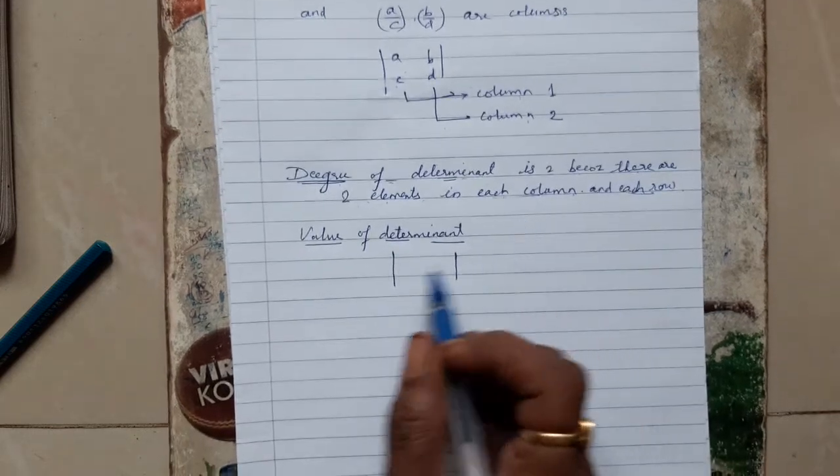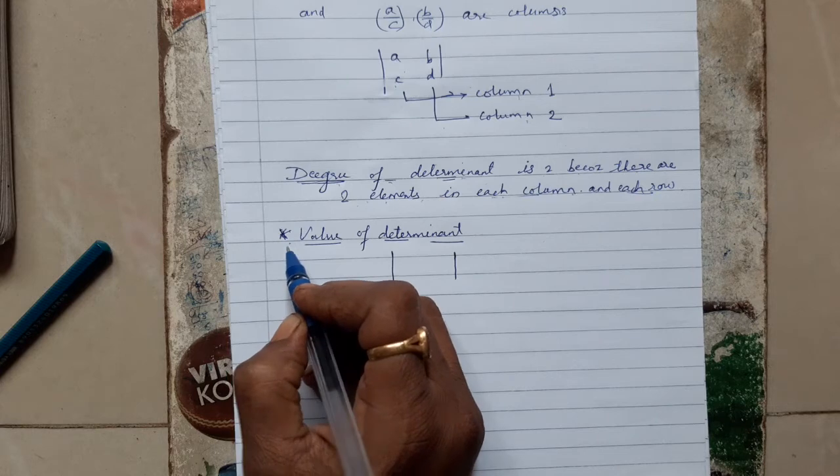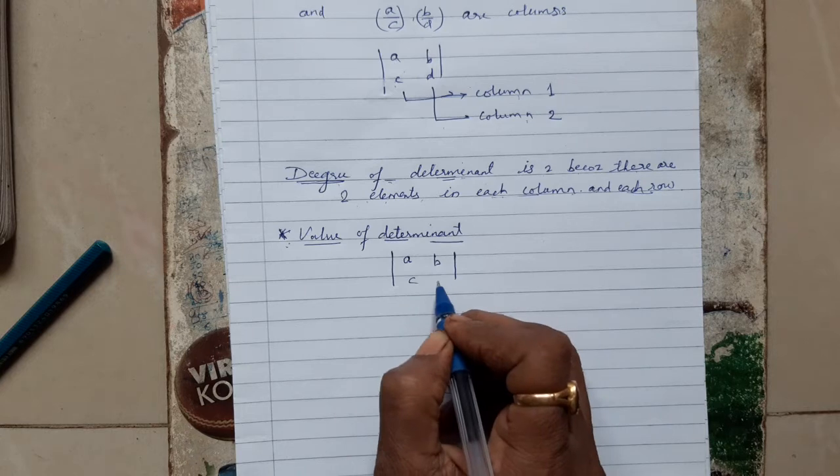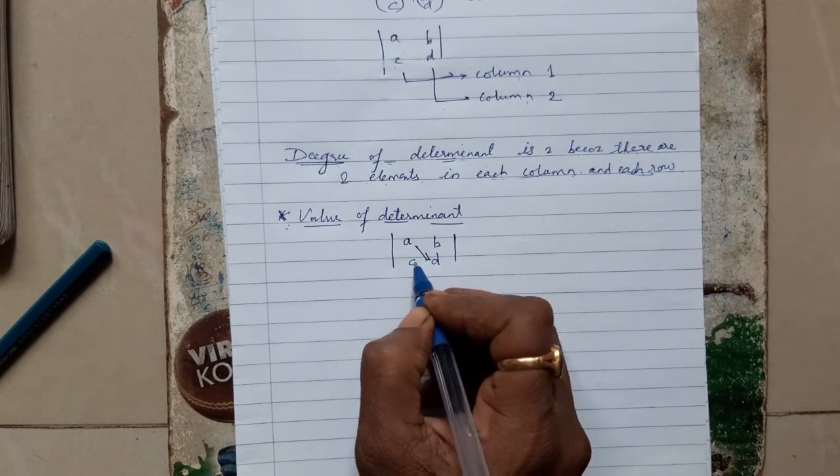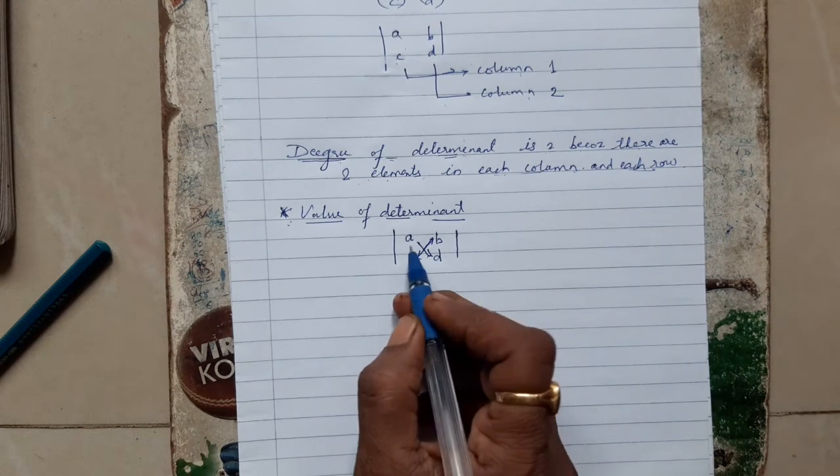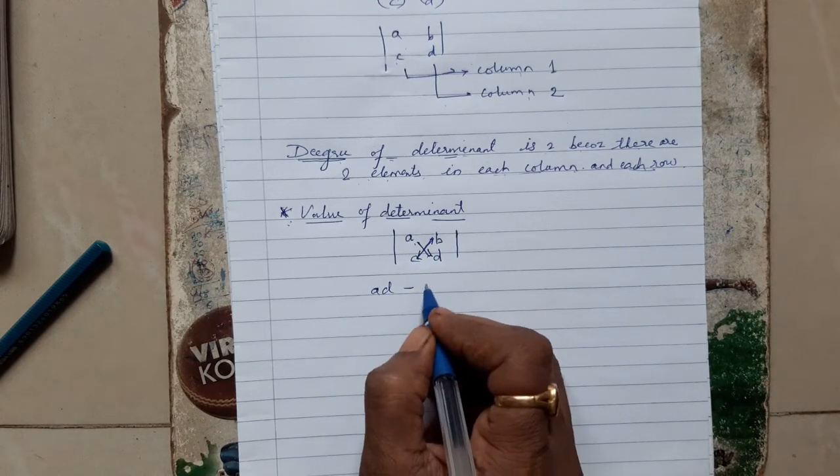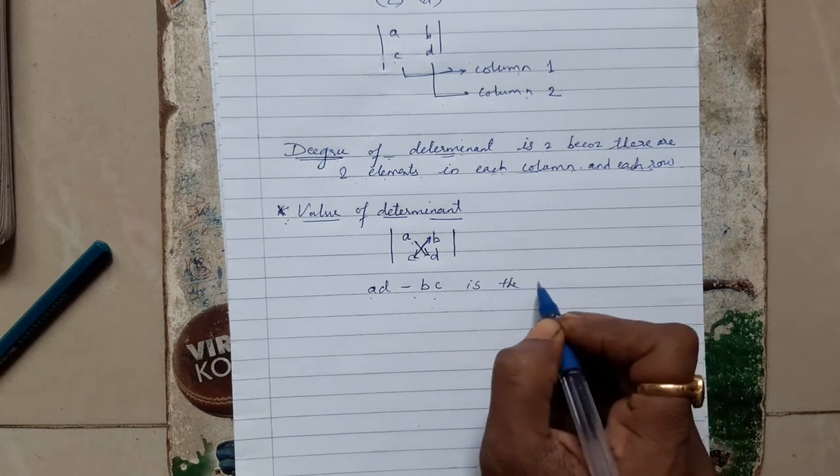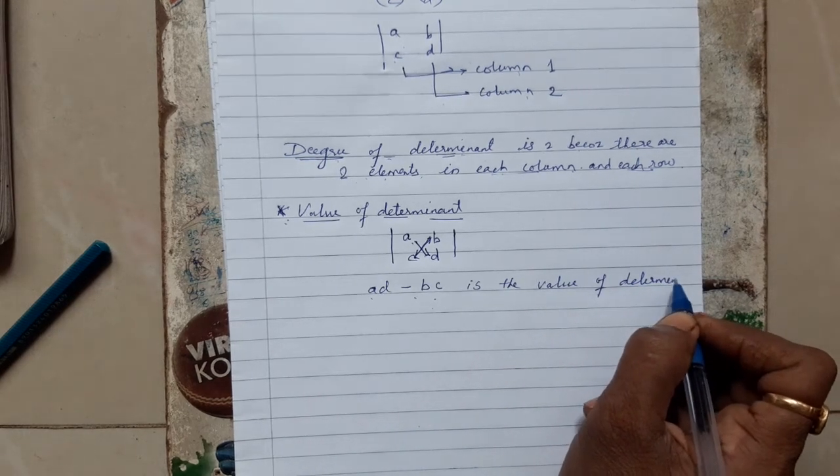Next is to find out the value of determinant. If the four numbers a, b, c, and d are given to you, then what you have to do is cross multiply them. Your determinant value is a into d minus b into c. So ad minus bc is the value of the determinant.